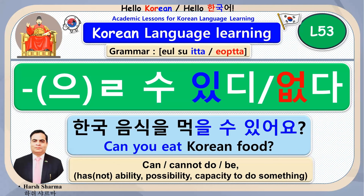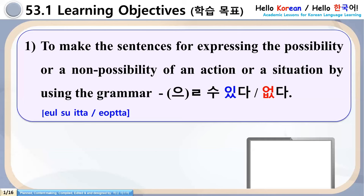Hello everyone and welcome to lesson 53 of Hello Korean. As you can see on this screen, we are going to learn a grammar called Ulsu Itta or Ulsu Akta. You can see one sentence here: Hanguk Umshigal Mogalsu Issayo, meaning 'Can you eat Korean food?' Now let's move to the learning objectives.